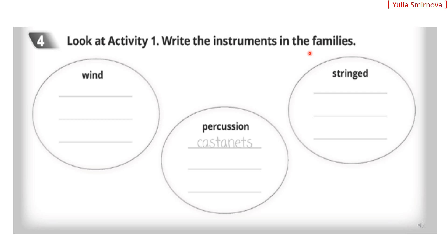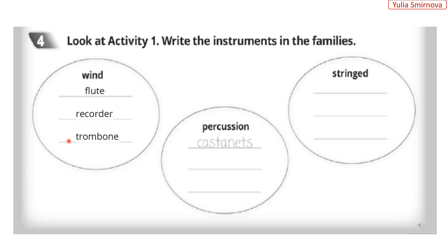Погляньте на попередню третю вправу та запишіть музичні інструменти до своїх родин. Wind instruments – духові інструменти. Percussion instruments – ударні інструменти. And stringed instruments – струнні інструменти. Wind instruments are: flute, recorder, and trombone – флейта, рекордер та тромбон.